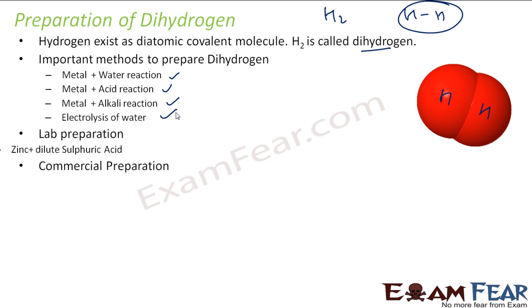In the lab, we generally use zinc and sulfuric acid to prepare hydrogen.